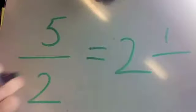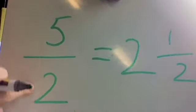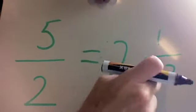What we do there is we put the 1 over our bottom number, over our denominator. Once again, how many 2s go into 5? The answer is 2, with 1 left over, over 2.